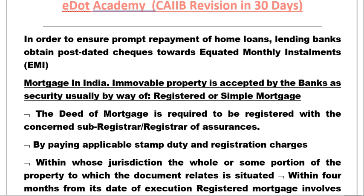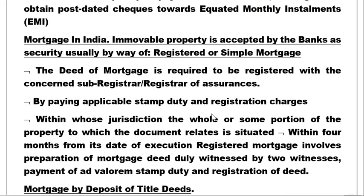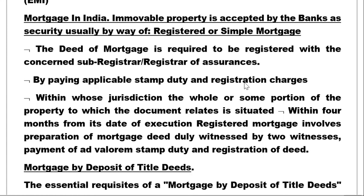Immovable property is accepted by banks as security usually by way of listed or simple mortgage. For registered mortgage, a deed of mortgage must be registered with the concerned sub-registrar or registrar by paying applicable stamp duty and registration charges. The registration must be within whose jurisdiction the property is situated. The registered mortgage must be executed within four months of execution, duly witnessed by two witnesses, with payment of stamp duty and registration.